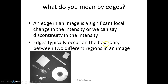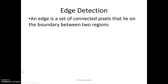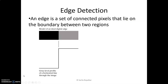Edges typically occur on the boundary between two different regions in an image. An edge is a set of connected pixels that lie on a boundary between two regions. Let us take this image. Here, the intensities are black and gray. The edge is the set of pixels that separates the black region from the gray region. This is a step edge profile — the transition from one intensity to another intensity is very sharp.